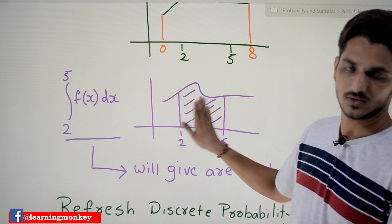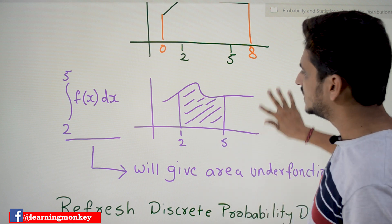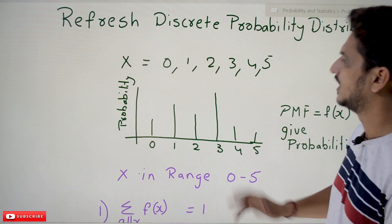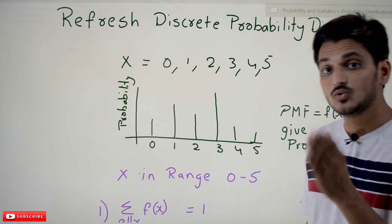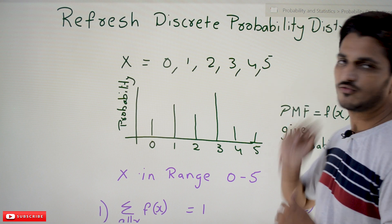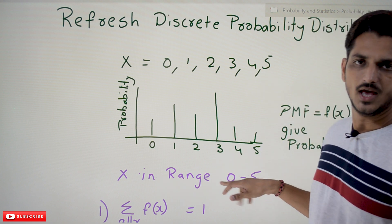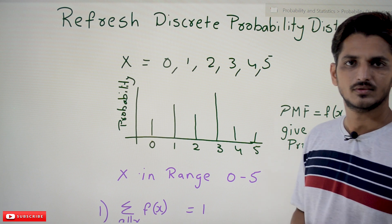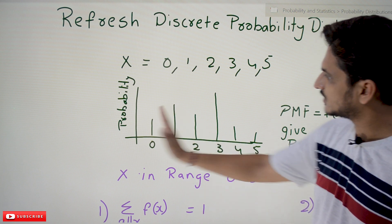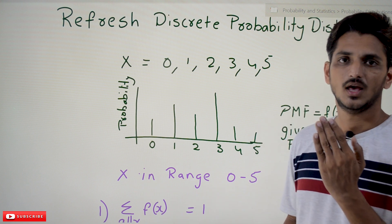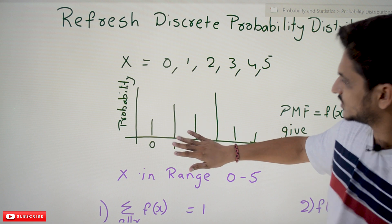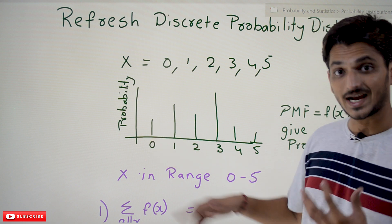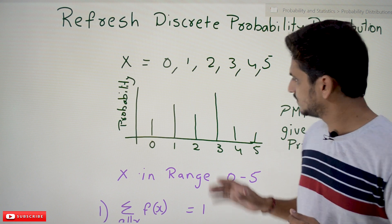Now coming to the discrete probability distribution — in our last classes we discussed about this, so let's refresh it once, because this helps you a lot in understanding continuous. If you take a random variable X, X is going to take the values 0, 1, 2, 3, 4, 5 — the range of X is 0 to 5. On the X axis we take the random variable values, on the Y axis we take the probability values. If you plot the discrete probability distribution, this is how it looks.